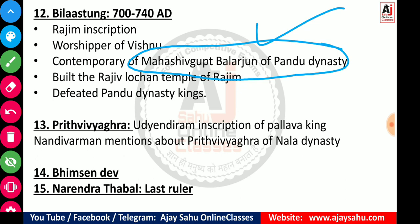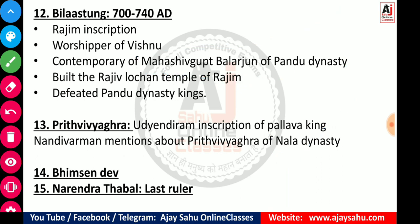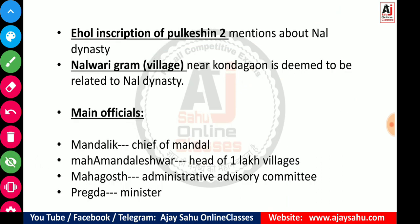After Bilas Tung comes Prithvi Vyagra, who is not very important, but the Udiyendiram inscription of Pallav king Nandivarman mentions Prithvi Vyagra of Nal dynasty. Then comes Bhim Seendev, and finally Narendra Thabal, who was the last ruler of the Nal dynasty, with a time period of 935 to 960 AD.